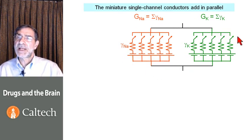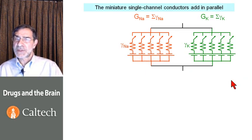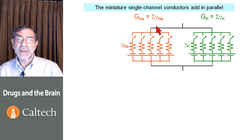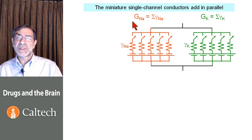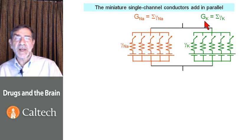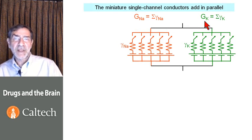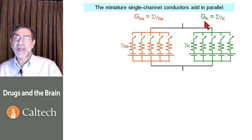We can abstract a cell into an equivalent circuit that has a large number of individual molecules, each of which is a potassium channel, and a large number of individual molecules, each of which is a sodium channel, producing summed conductances for sodium and potassium. There are also channels for other ions and there's capacitance, which we will not worry about during this particular lecture.